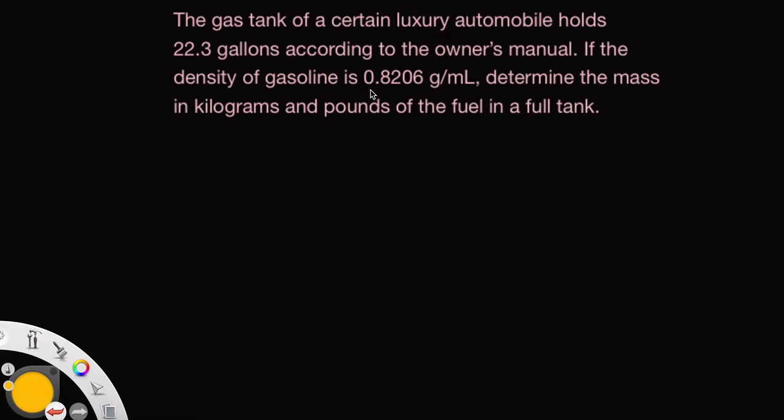The problem where we're given information about gasoline, it has density of 0.8206 grams per milliliter - notice the units there - and we're starting with a volume, 22.3 gallons, which is an English measure for volume.